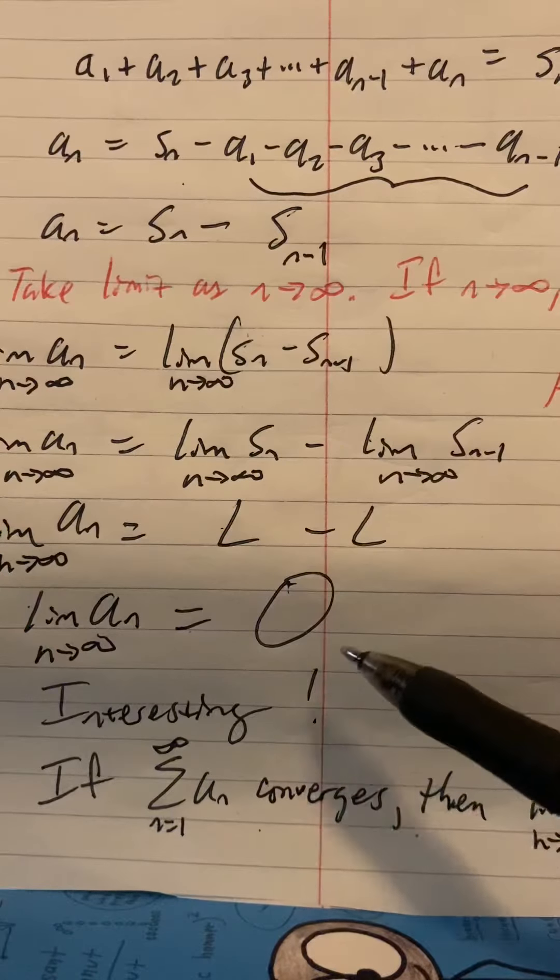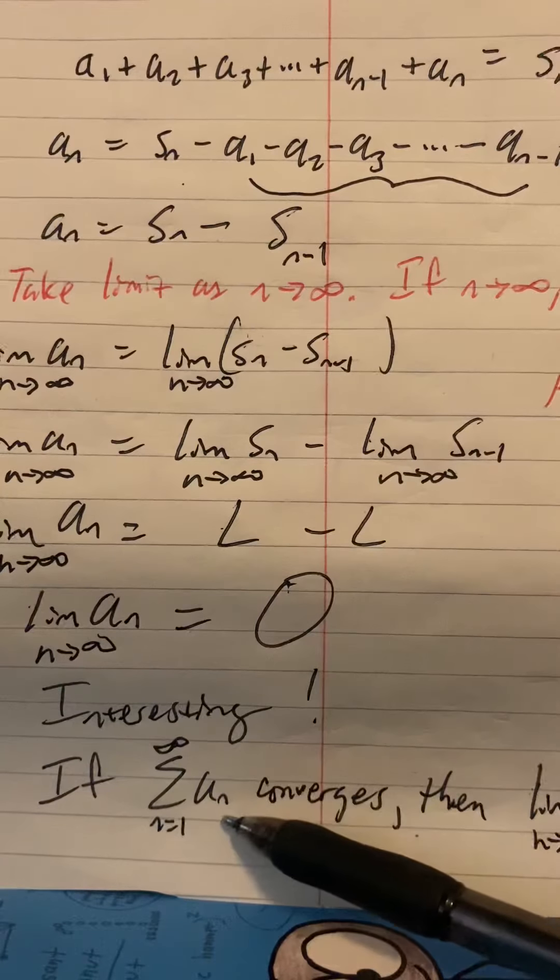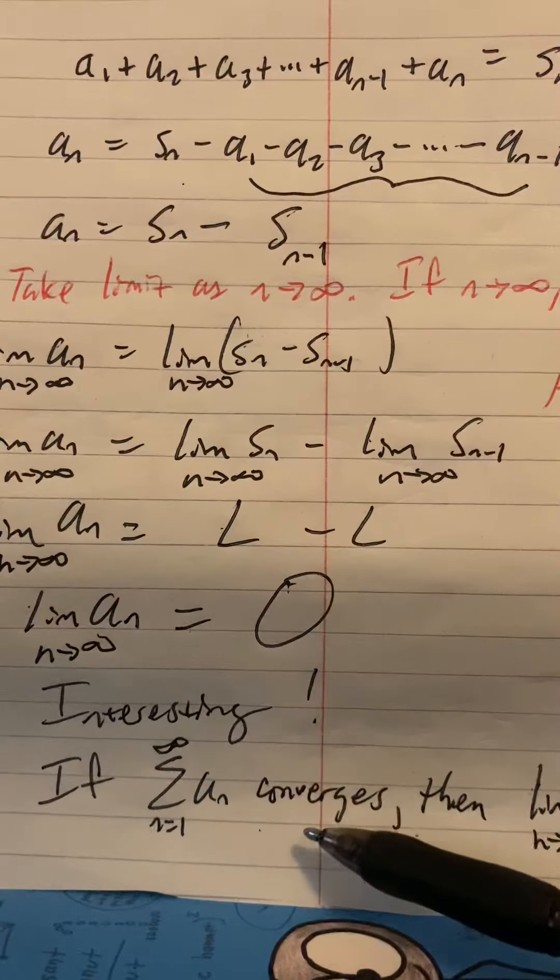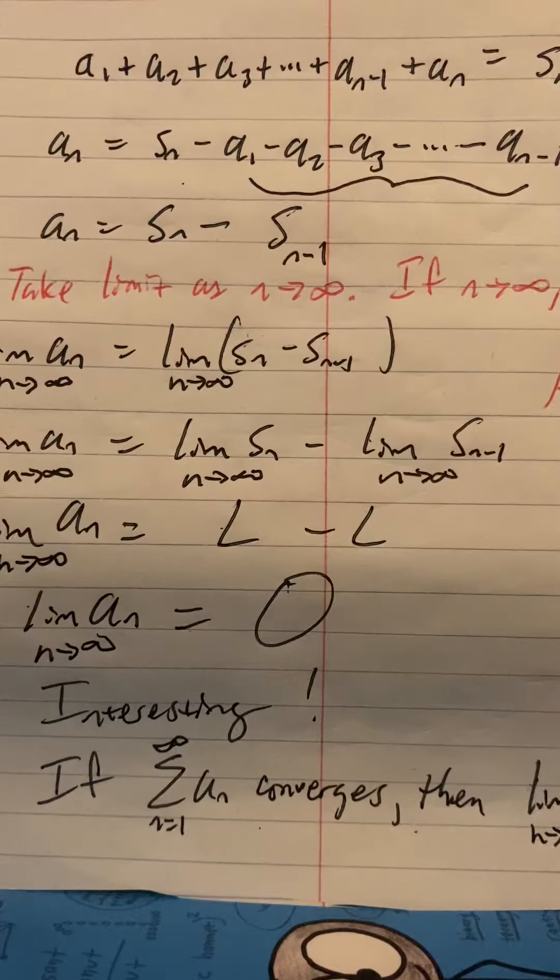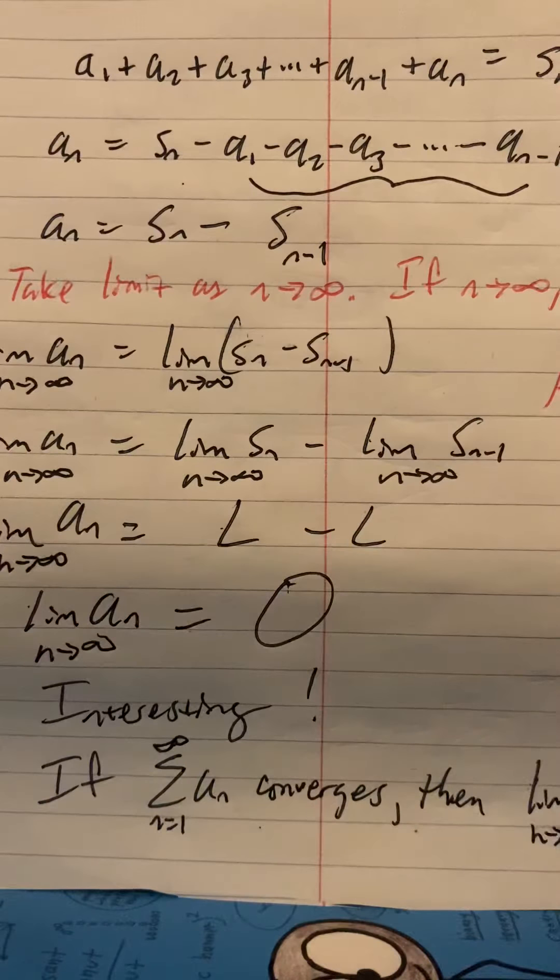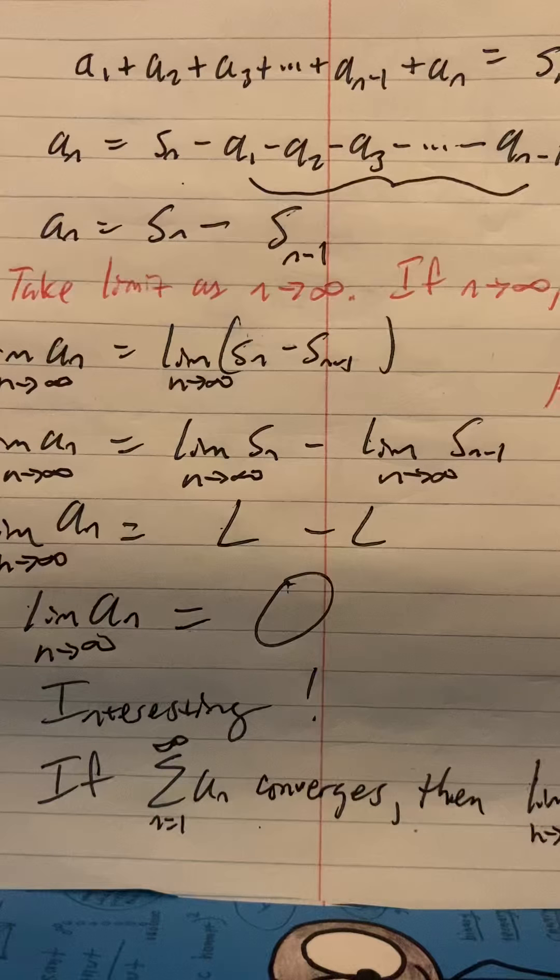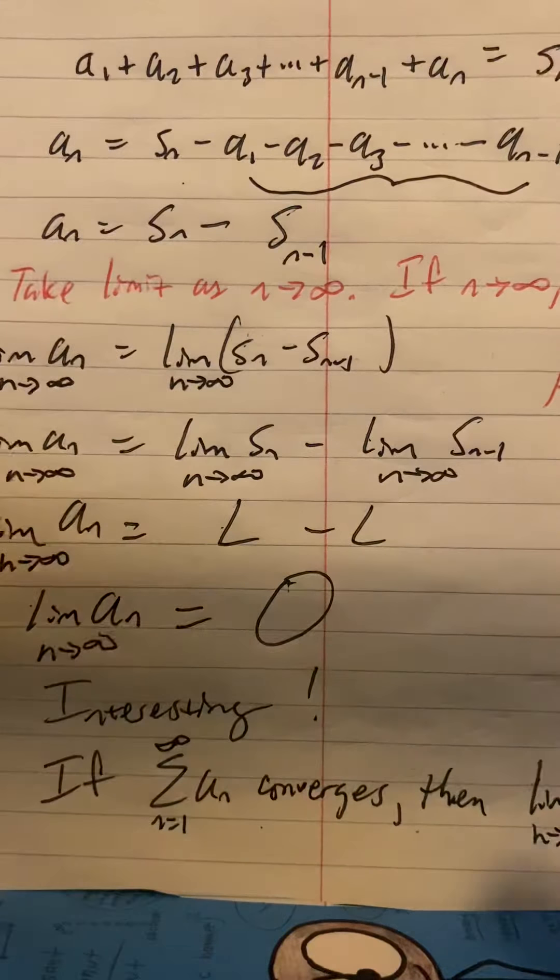That's interesting. What we realize is that if we look at a series, the sum of a sequence, and it converges, then the limit of the sequence, the argument of the series, the limit of that argument must be zero. Now we're going to use that to develop something called the divergence test, but we first need to review some logic.